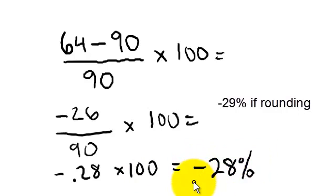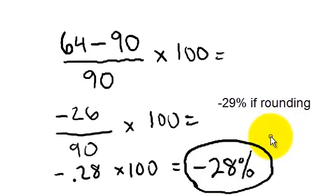negative 28%. And it's a negative because you have a decrease, a percentage of decrease of 28%. Alright, I hope that helped.